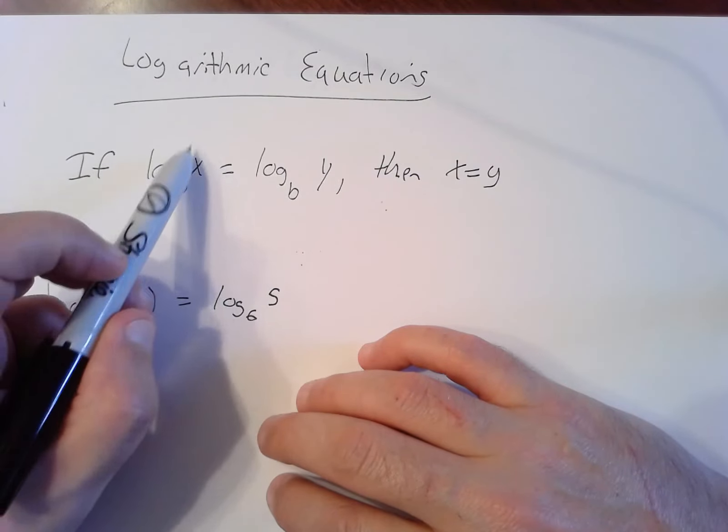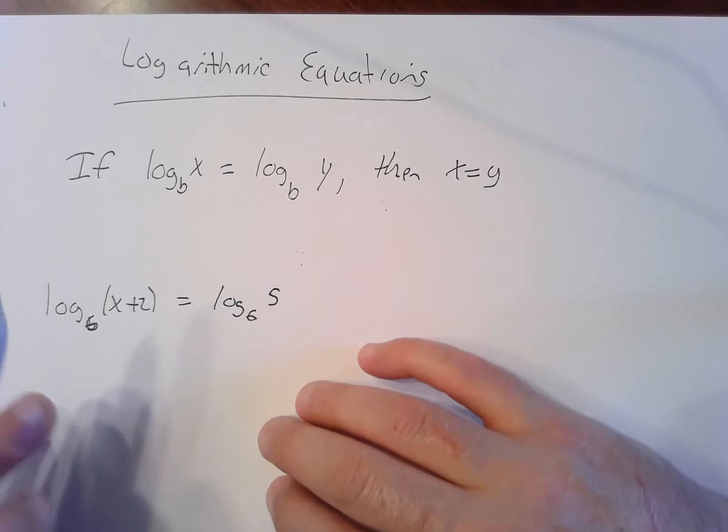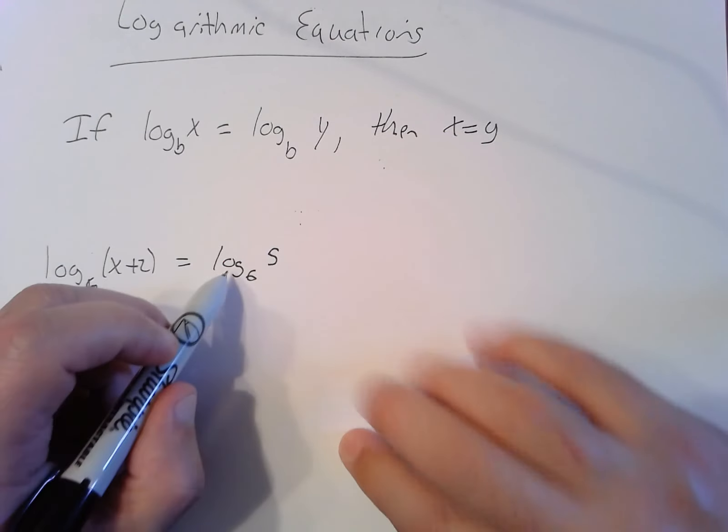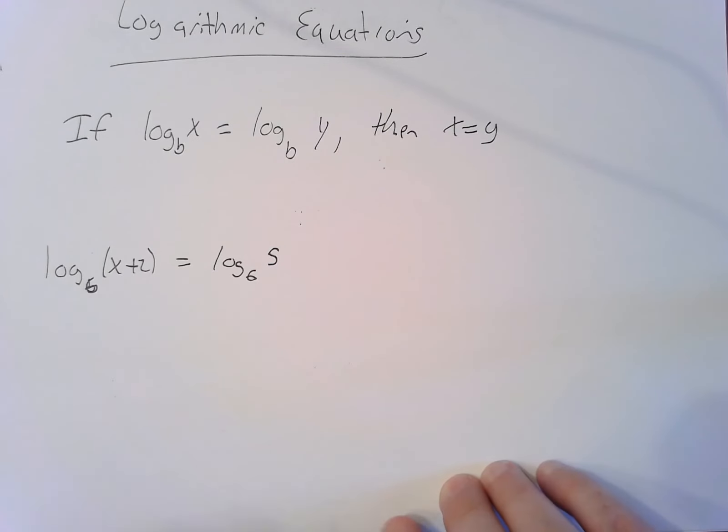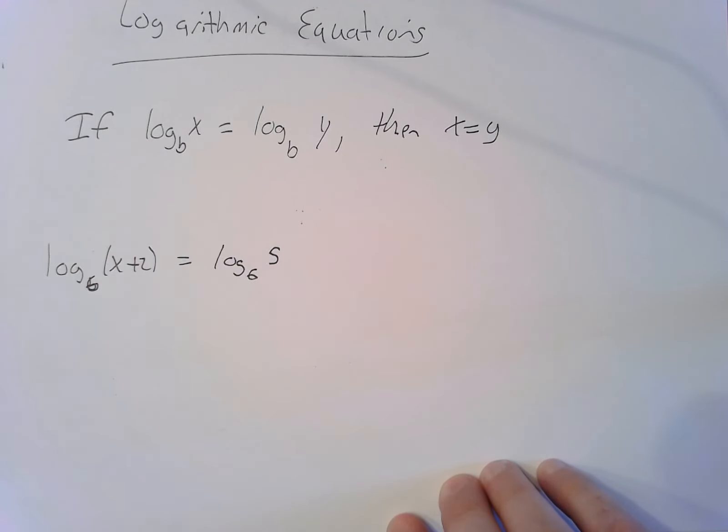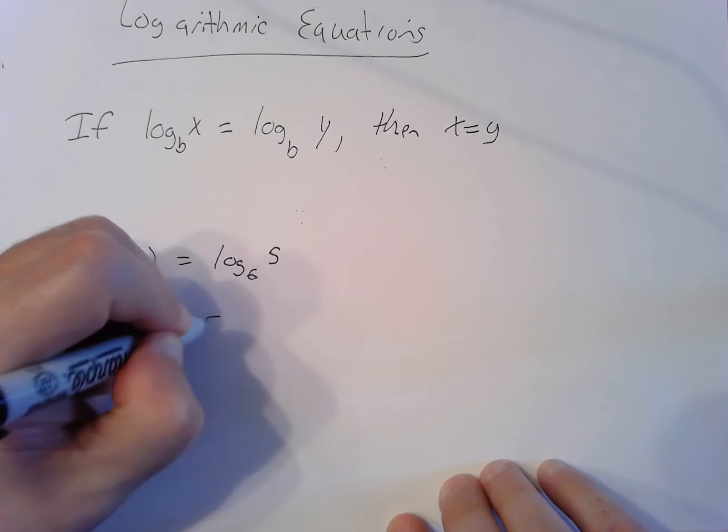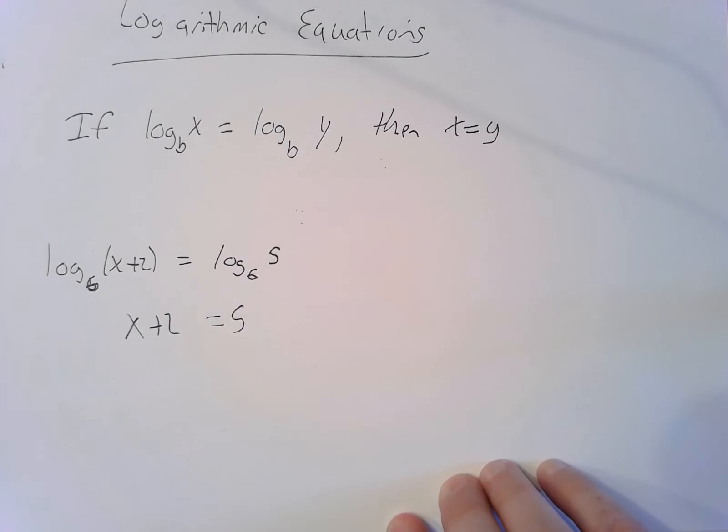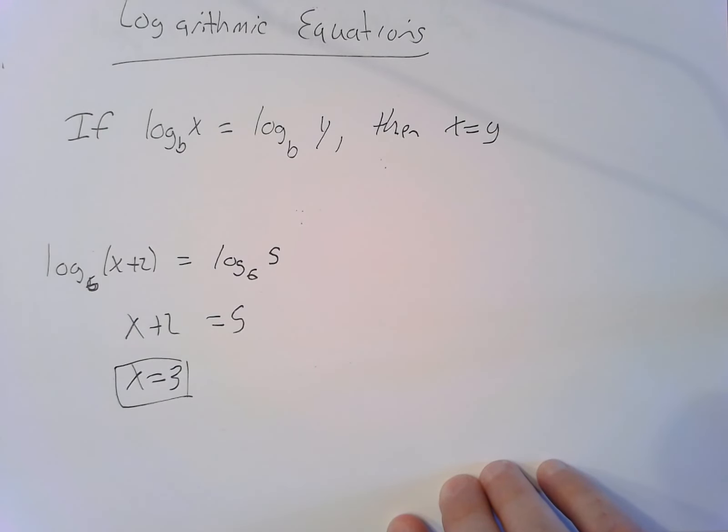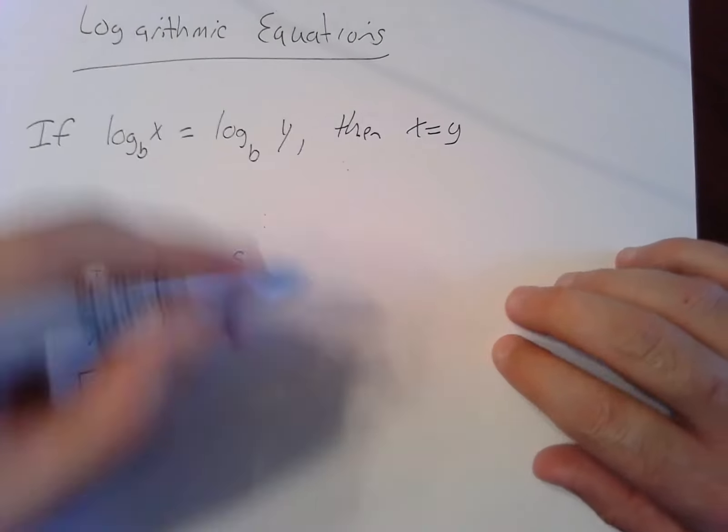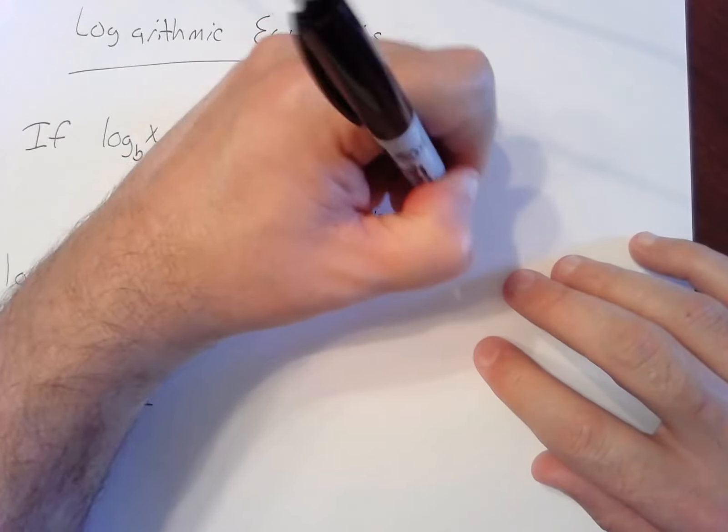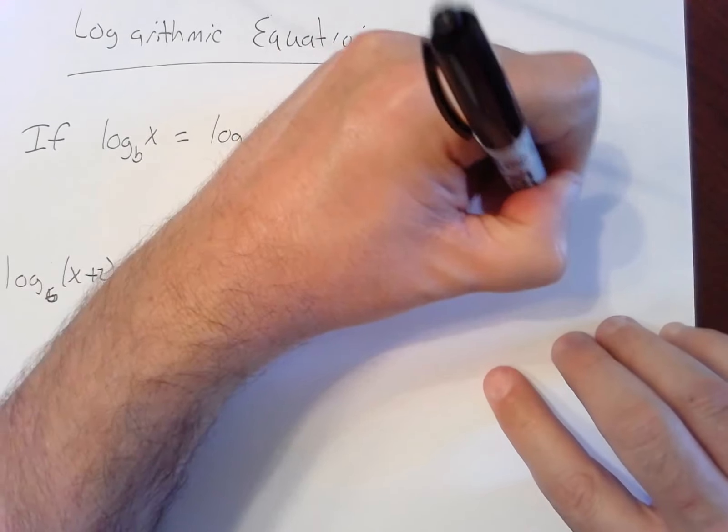So if for example I had log base six of x plus two is log same base of five, you can in a sense cancel out the logs and say x plus two equals five, which means x equals three.